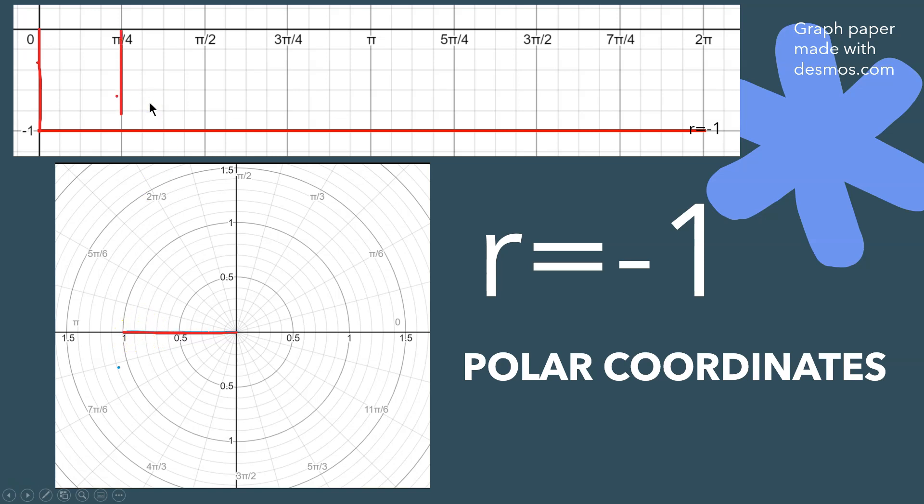Now look at pi over 4, that's another segment. Again, the angle is positive, but because r is negative, the segment in polar coordinates looks like the following that I've just drawn there.